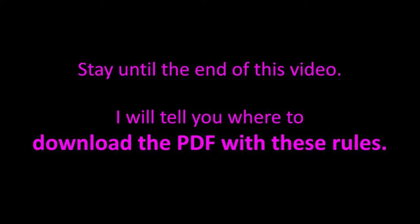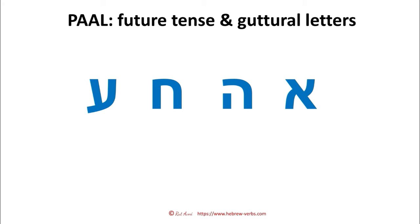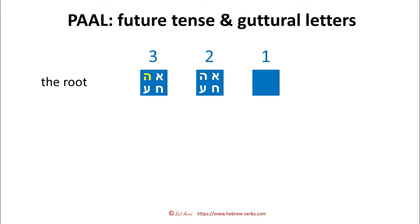By the way, make sure you stay until the end of this video, because at the end I will tell you where to download the PDF with these rules. Now, these here are guttural letters, and guttural letters were mentioned in the question of Alexandru. These guttural letters in the roots greatly influence the conjugation pattern of the future tense. I know — LILMOD didn't have one. And to that we come at the end. If one of those letters is on the second or third root position of a Paal verb, the future tense is not conjugated as in EFOL. This is the rule.